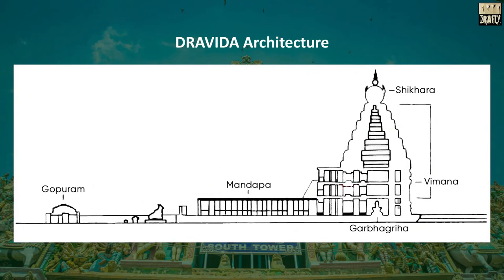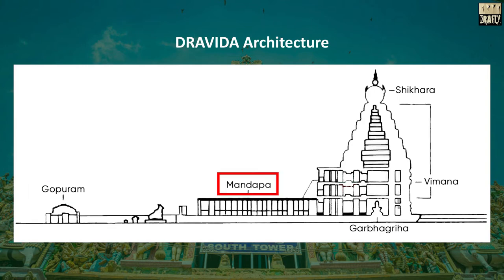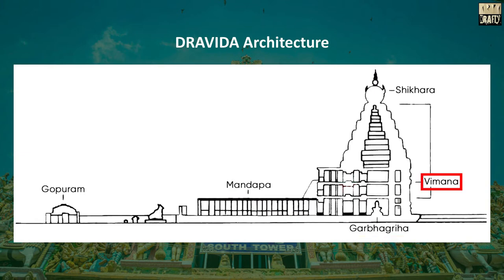This is the structure of Dravidha architecture. This is Gopuram; this area is known as Mandapa; this is Garbhagriha; the main tower is known as Vimana; and the top portion is known as Shikhara.